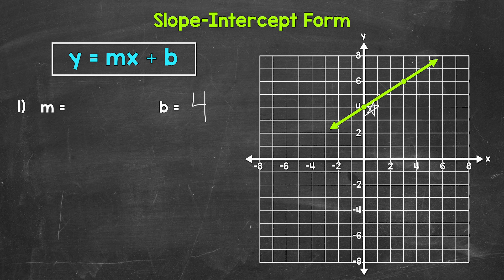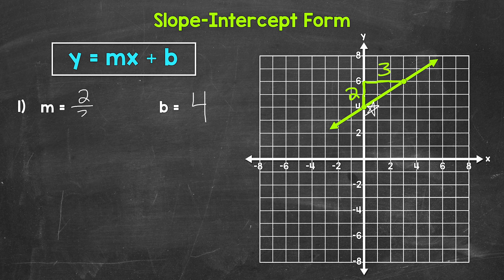Now we find our slope by going from one point on the line to another, working from left to right. We're going to start at that y-intercept and work our way to the other point. Remember, slope equals rise over run. We need to go up two units to align with the other point — that's our rise, a positive 2. Then we need to go to the right three units to get to our other point. So our run is positive 3. Rise of 2 over run of 3 gives us a slope of 2 thirds.